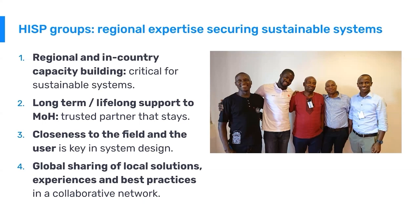So what are the four ingredients that make up the secret HISP sauce recipe? Number one is capacity building. Regional and in-country capacity building is the most important activity for HISP. Having strong regional and in-country capacity is critical to achieve sustainability. The second is to provide long-term support. HISP is not a project — it's a program. The HISP groups are long-term and trusted partners to the Ministries of Health.